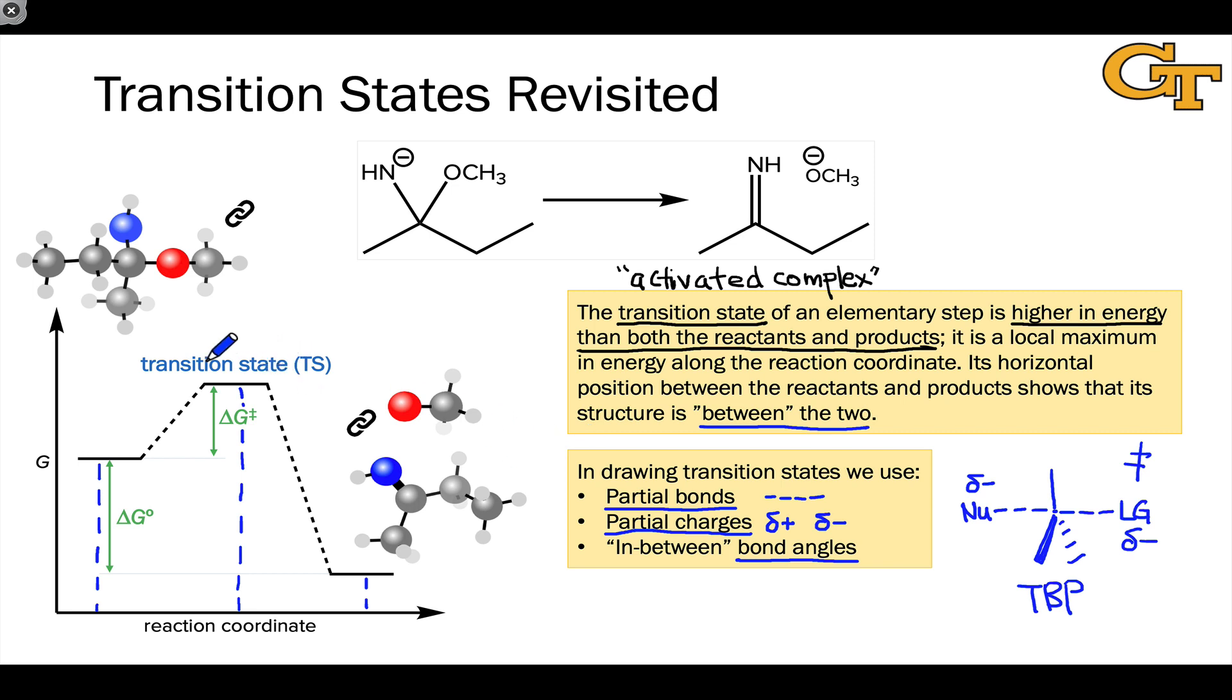If we want to understand catalysis, appreciating the structure of a transition state is key, because the catalyst will engage with the rate-determining transition state to stabilize it relative to the uncatalyzed process. For example, a catalyst of the SN2 reaction might have positive charge. The interaction between the partial negative charge of the leaving group and the positive charge of the catalyst is a stabilizing effect on this transition state that could accelerate the step. These are the kinds of interactions we think about when we think about a catalyst engaging with a transition state.